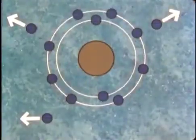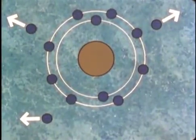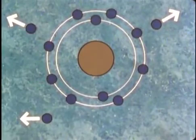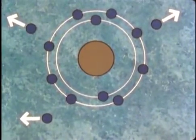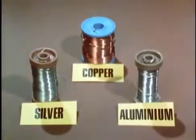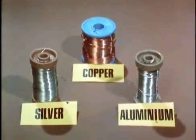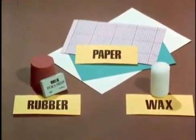You remember the aluminum atom. Aluminum is a substance with easily dislodged electrons, and so is called a conductor. Silver, copper, and aluminum are examples of good conductors, while rubber, paper, and wax are examples of poor conductors.